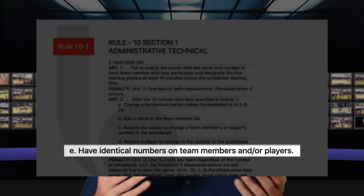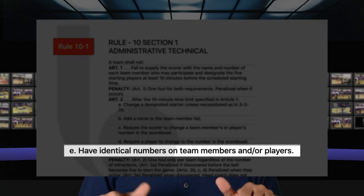Article 2E: have identical numbers on team members and/or players. That can happen more likely at lower-level games — JV, freshman, middle school — where uniforms are not always consistent. The visiting coach says, 'Hey, they have two number 12s.' When it is recognized, it is penalized. That would be an administrative technical foul. Those are all the possible administrative technical fouls.